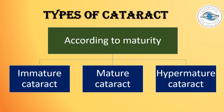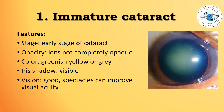According to maturity, cataract can be classified as: number one, immature cataract; number two, mature cataract; and number three, hypermature cataract. Immature cataract is an early stage where the lens is not completely opaque. The color is greenish, yellow, or grey as seen in this photograph, iris shadow is still visible, vision is usually quite good, and visual acuity can be improved with spectacles.